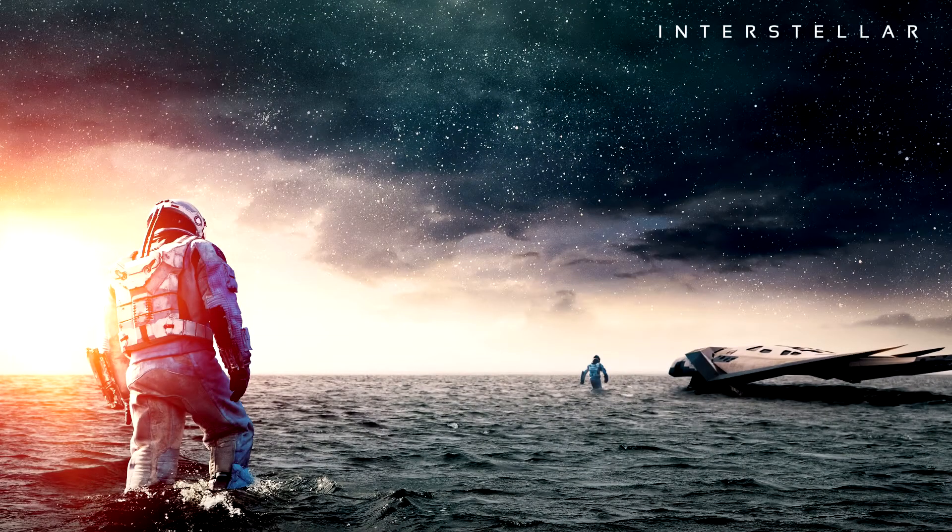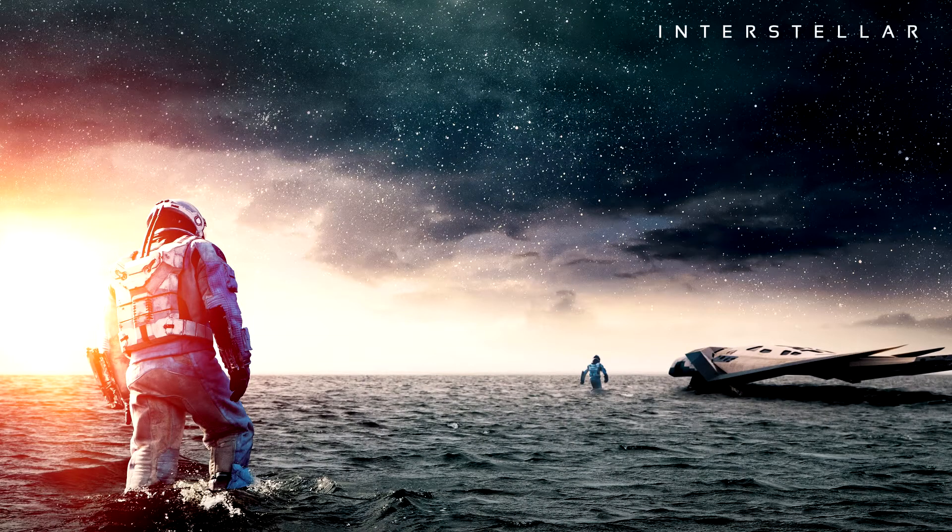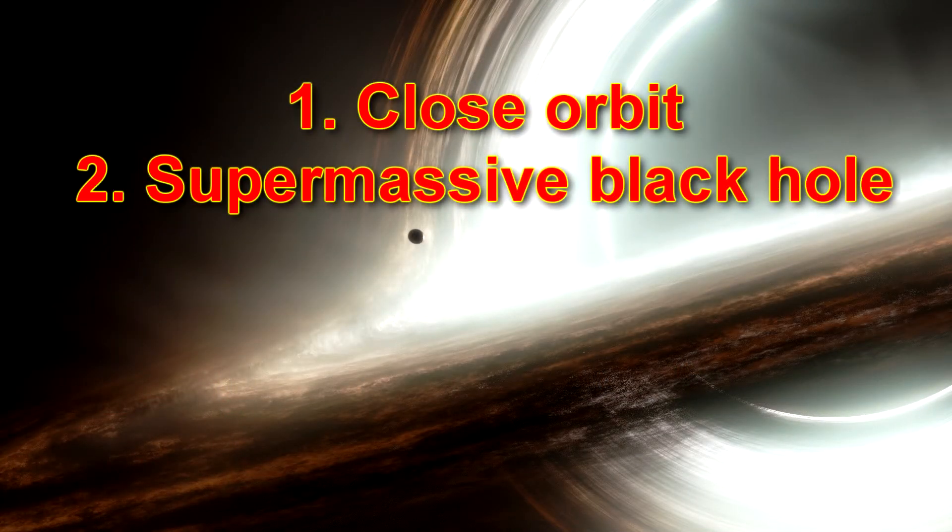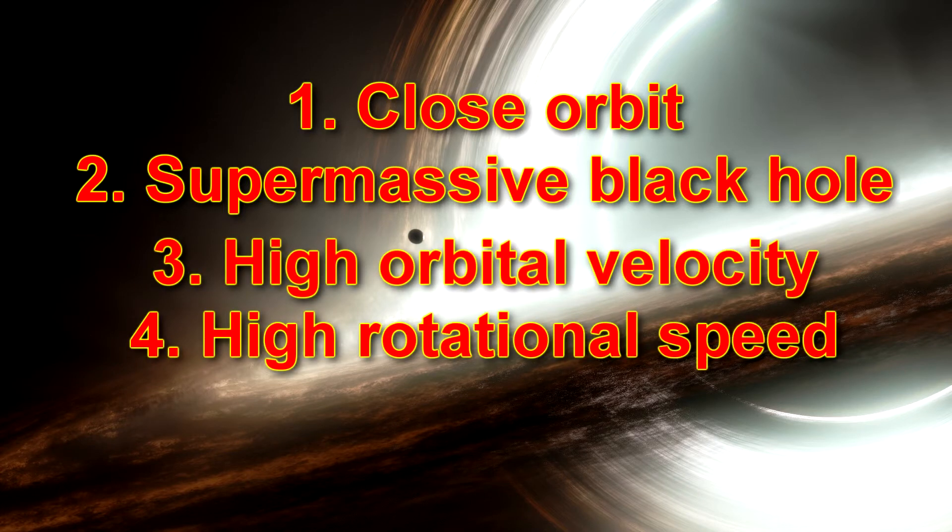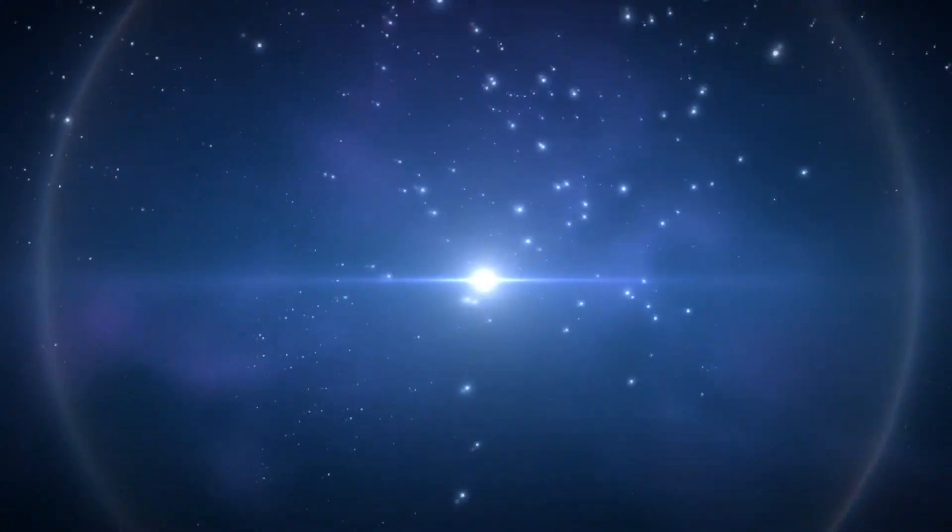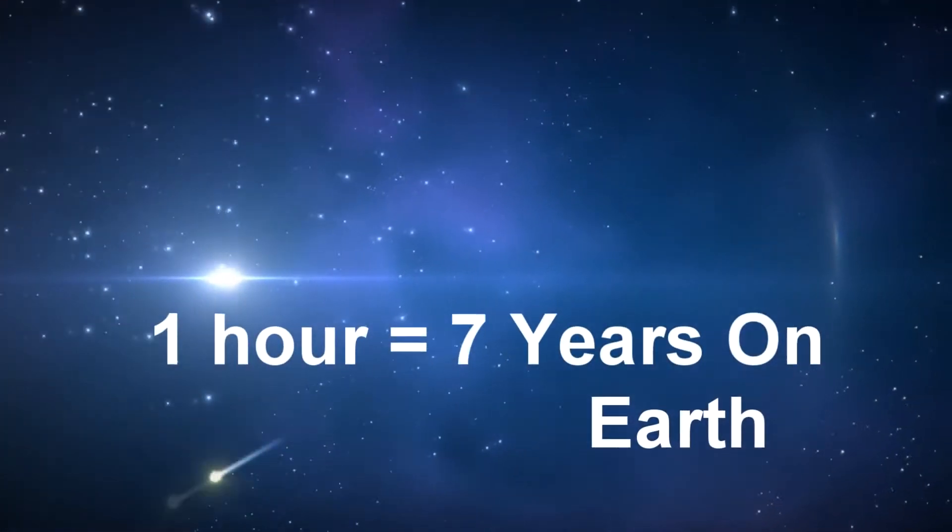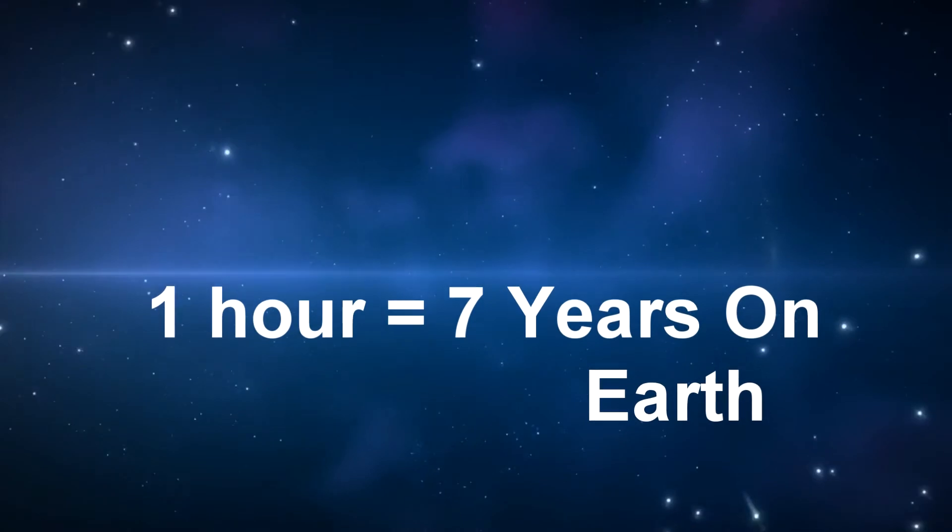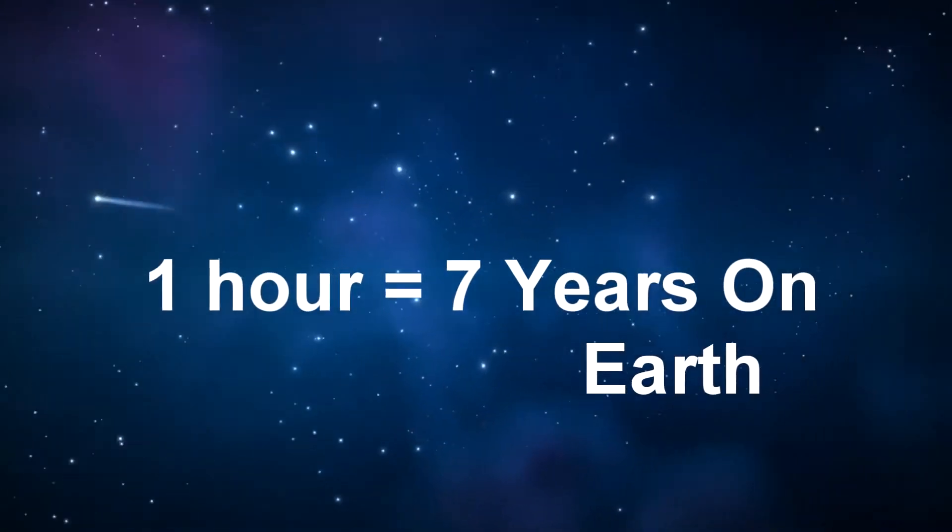In the movie Interstellar, a fantastic example using both special and general time dilation is used. A planet orbits really close around a supermassive black hole with a mass millions that of the sun. Gravity alone dilates time for the planet quite a lot. However, the planet is also moving at really high velocities around the black hole because it's so close. And the black hole itself is rotating at near the speed of light. All of these factors add up together to slow down time enough so that one hour on this planet is equal to seven years outside the sphere of influence, or basically on Earth.